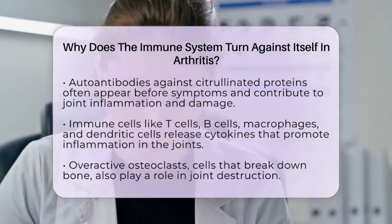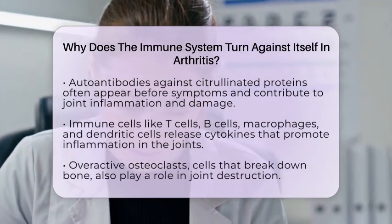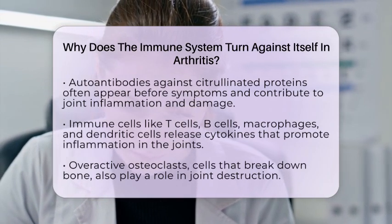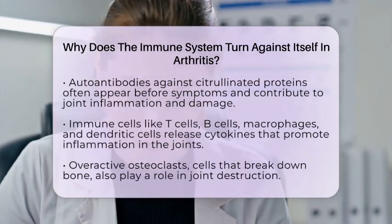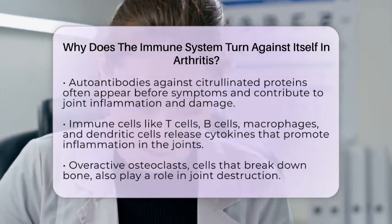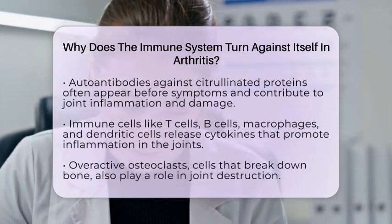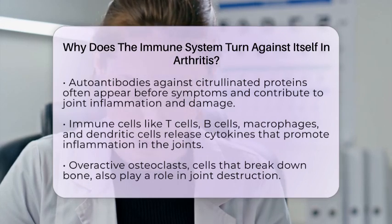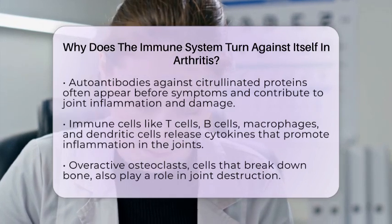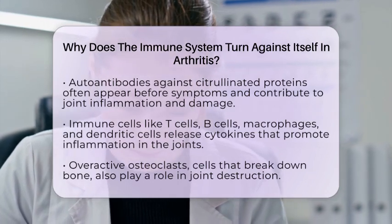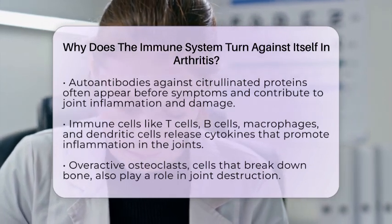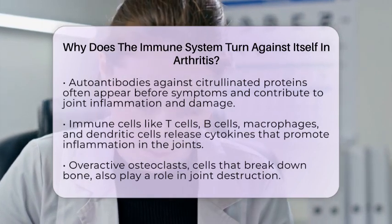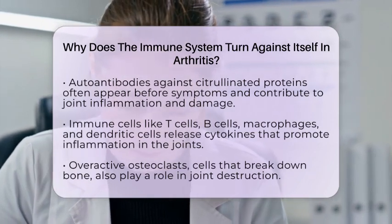Immune cells like T-cells, B-cells, macrophages, and dendritic cells become overactive and release chemicals called cytokines that promote inflammation. This causes the synovial lining to thicken and produce more inflammatory chemicals, leading to tissue destruction.